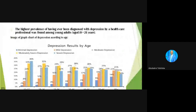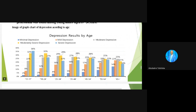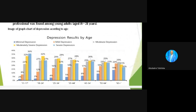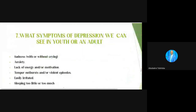The age group most affected is 18 to 24 years. Looking at the graph chart of depression according to age, there are five color-coded boxes: yellow represents moderately severe depression, dark blue represents minimal depression, light blue represents severe depression, orange represents mild depression, and silver represents moderate depression. The chart shows results by age groups, notably 11 to 17 and 18 to 24, where light blue — severe depression — is prominent.